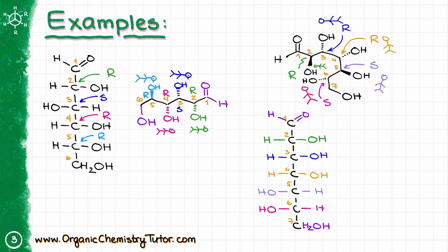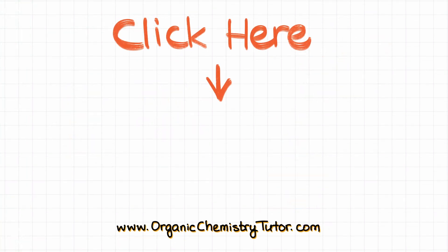So now that you know how to convert Fischer projections into dash-wedge bond line structures, or take a bond line structure and convert it into a Fischer projection, you can branch into other molecular representations like Newman projections and chair conformations. If you want to learn how to draw your Newman projections like a pro, watch this video next.